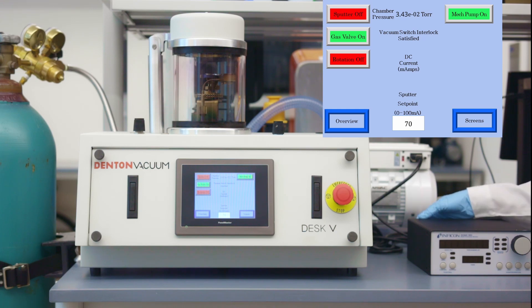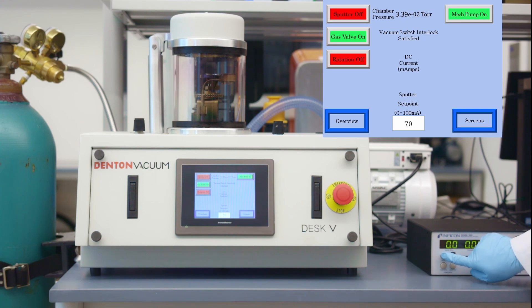Now power on the thickness monitor by toggling the power switch on the back of the monitor. Once the thickness monitor is turned on, press the zero button.